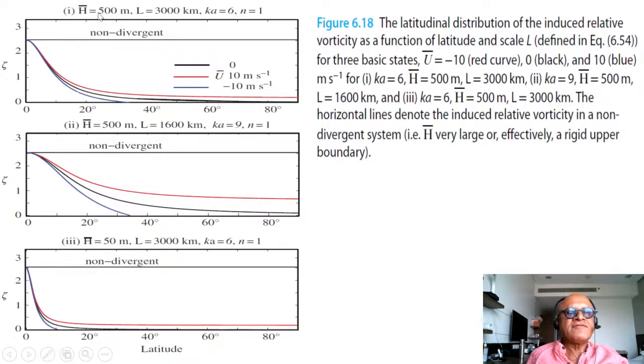Look at different depths: 500 and then 50. Look at different horizontal scales: 3000 kilometers and 1600 kilometers. Look at different wave numbers 6 and 9, and we have fortunately kept n to 1, the meridional mode of 1.